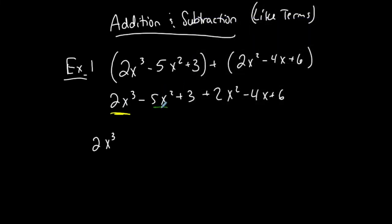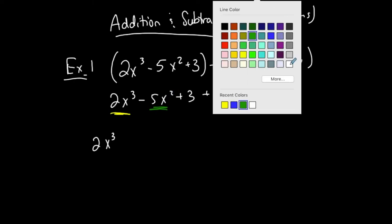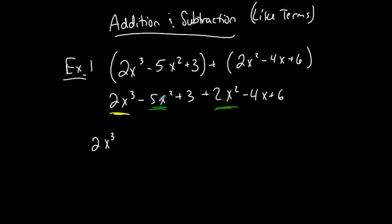The next highest exponent is x squared. I have negative 5x squared and another x squared term, so I have two terms that include an x squared — which means they are like terms. Negative 5 plus 2 is negative 3. So I'm going to deal with the coefficients: negative 5 plus 2 is minus 3, and I'm going to maintain the variable portion — negative 3x squared. I'm not adding exponents. I deal with the coefficients and maintain the variable portion.